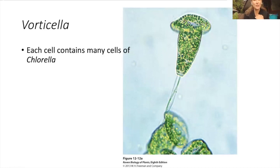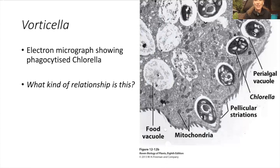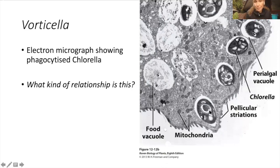Vorticella is a cute little heterotrophic protist. It's in the water, and I said it was heterotrophic, but you can see it's clearly green. It's filled with many, many cells of a single-celled alga called chlorella. And if you slice open a Vorticella cell, you'll see that these chlorella cells have been phagocytosed by the Vorticella. Phagocytosis is the ability for organisms to envelop and engulf their prey.